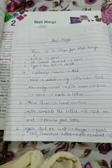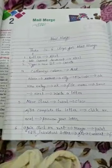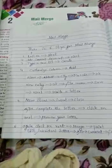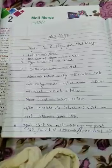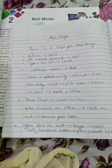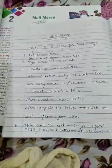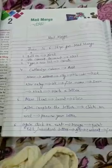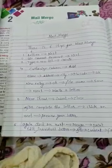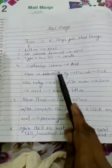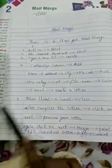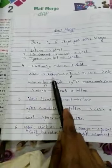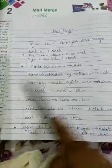Then after that, customize columns. In customize columns there will be fields like name, address, city, and pin code. You will select which ones you want to keep. If you don't want to include the city name, you don't need to write city. You can keep only name, address, and pin number.